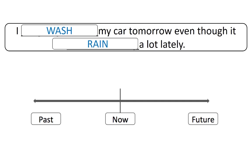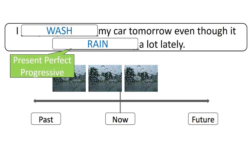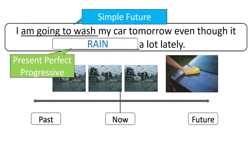First, let's think carefully about the second verb, 'rain.' Notice the key word: 'lately.' This is something that started in the past, continues now, and may continue in the future. 'Continue' is a key word here. That means we should use present perfect progressive tense. The first verb, 'wash,' is probably a bit easier. The correct answer is: 'I am going to wash my car tomorrow, even though it has been raining a lot lately.'